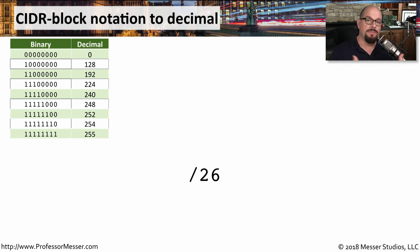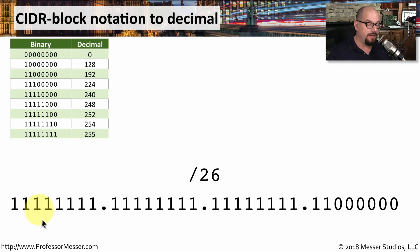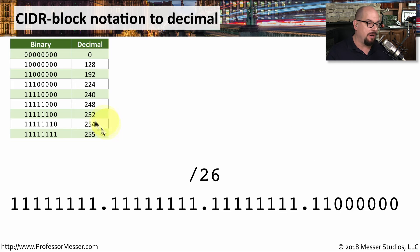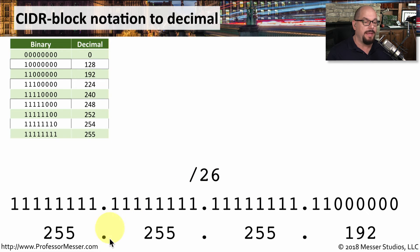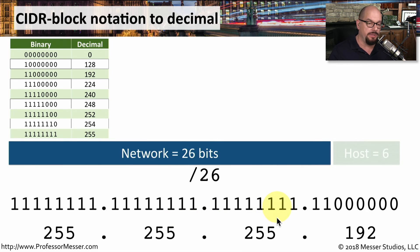Let's do this in reverse, where we have the CIDR block notation and want to convert back to the decimal representation. We have a slash 26 as our subnet mask. If we write this out in binary form, there are 26 ones and then the remaining zeros. Looking at our reference chart, all ones is 255 and two ones at the beginning would be 192, making this subnet mask 255.255.255.192 — 26 bits for the network address and six bits for the hosts on each network.